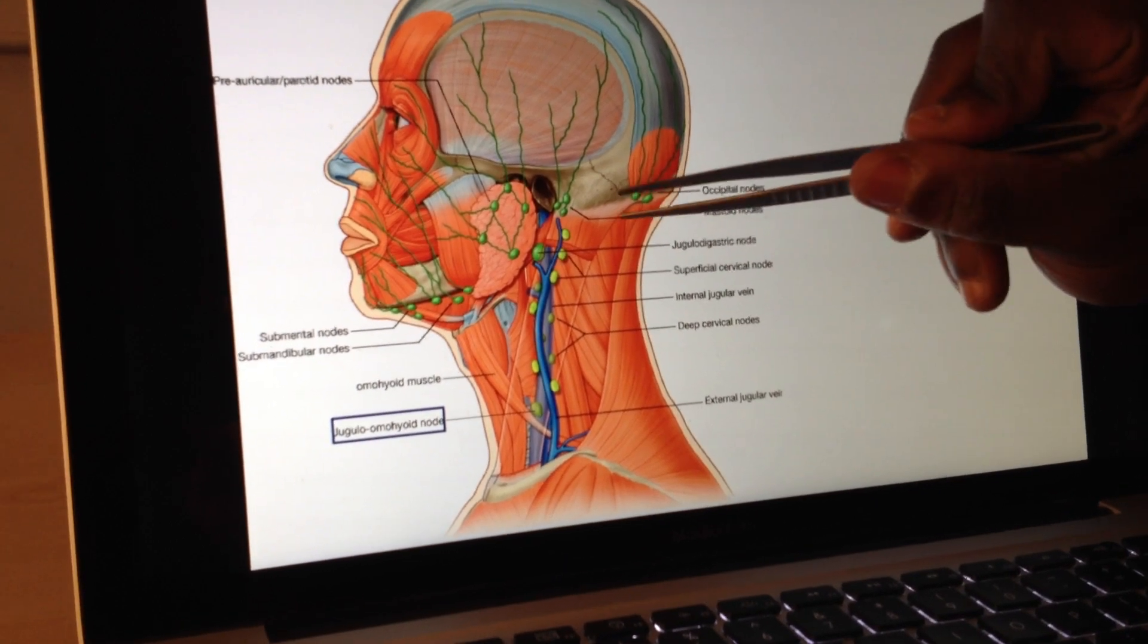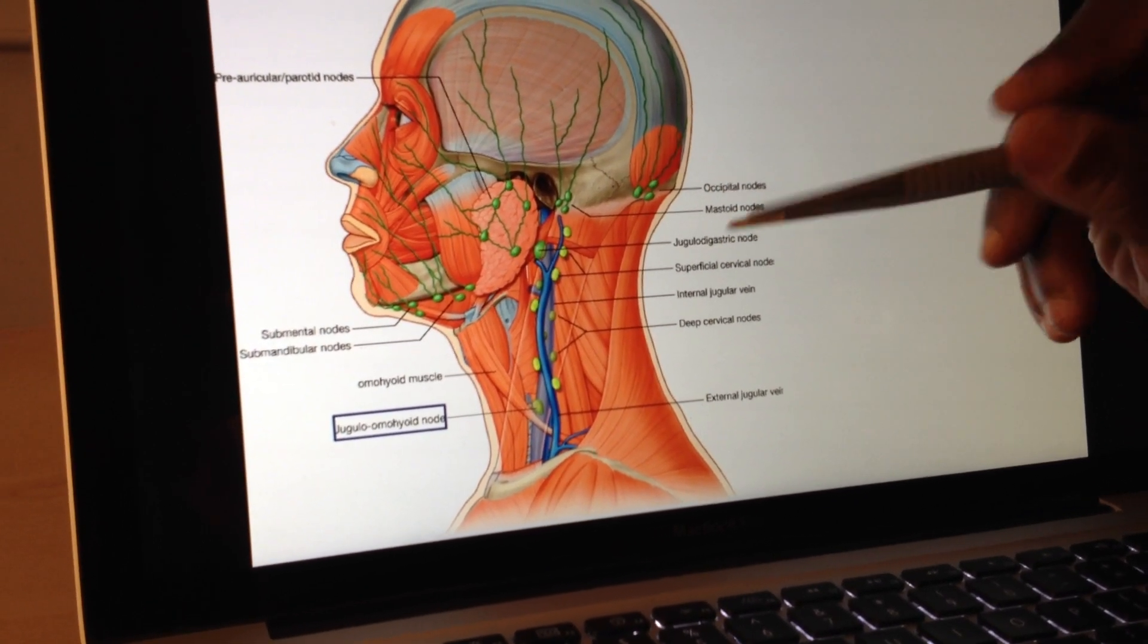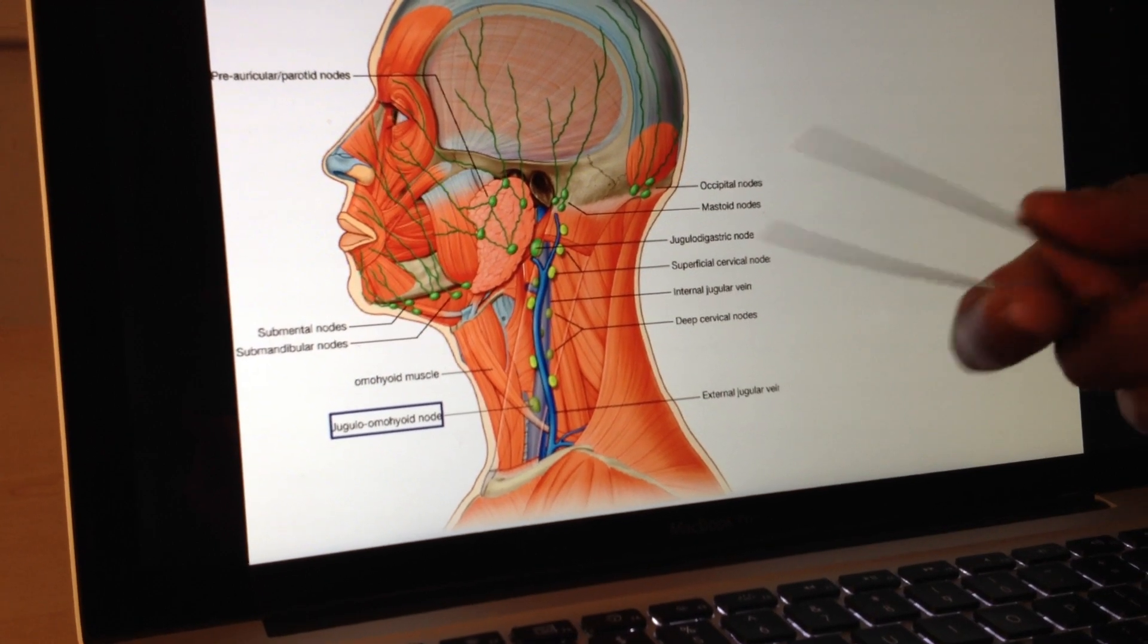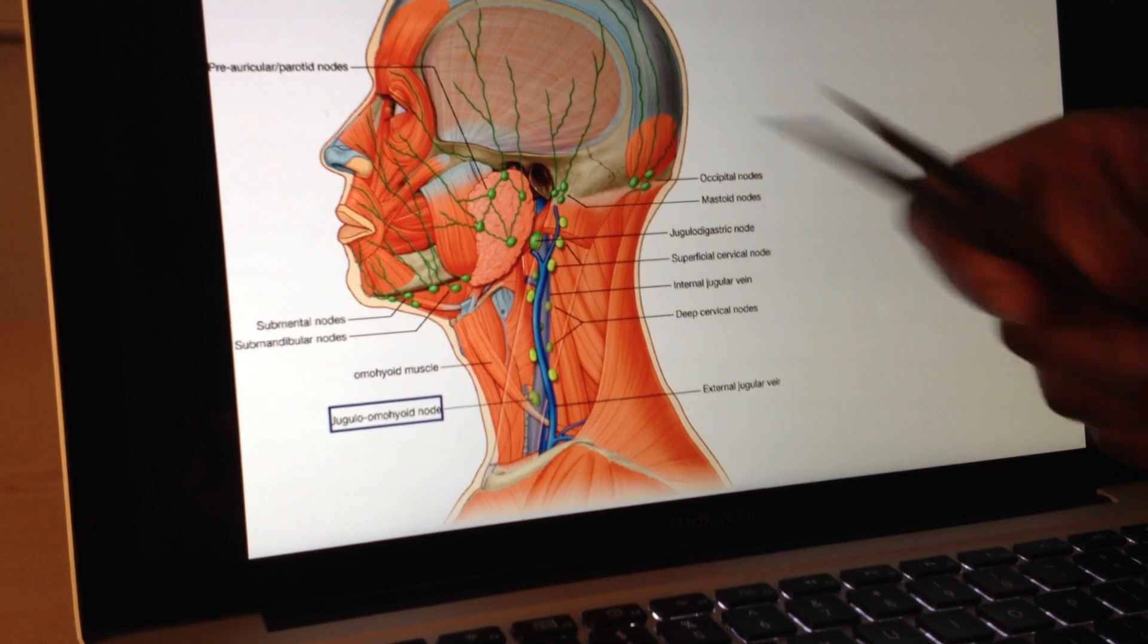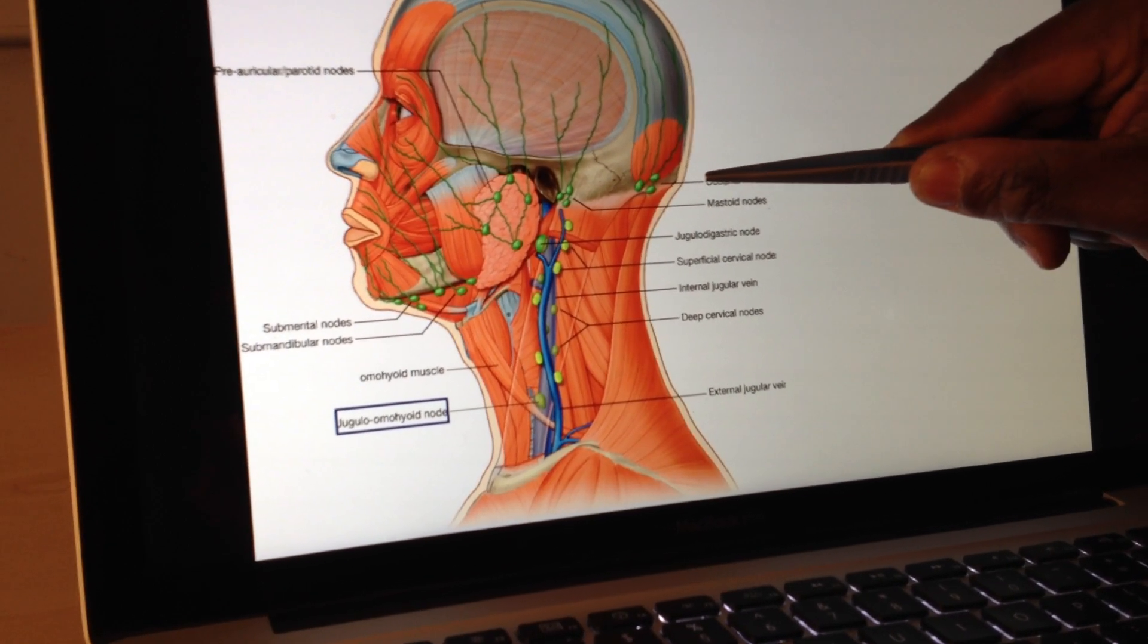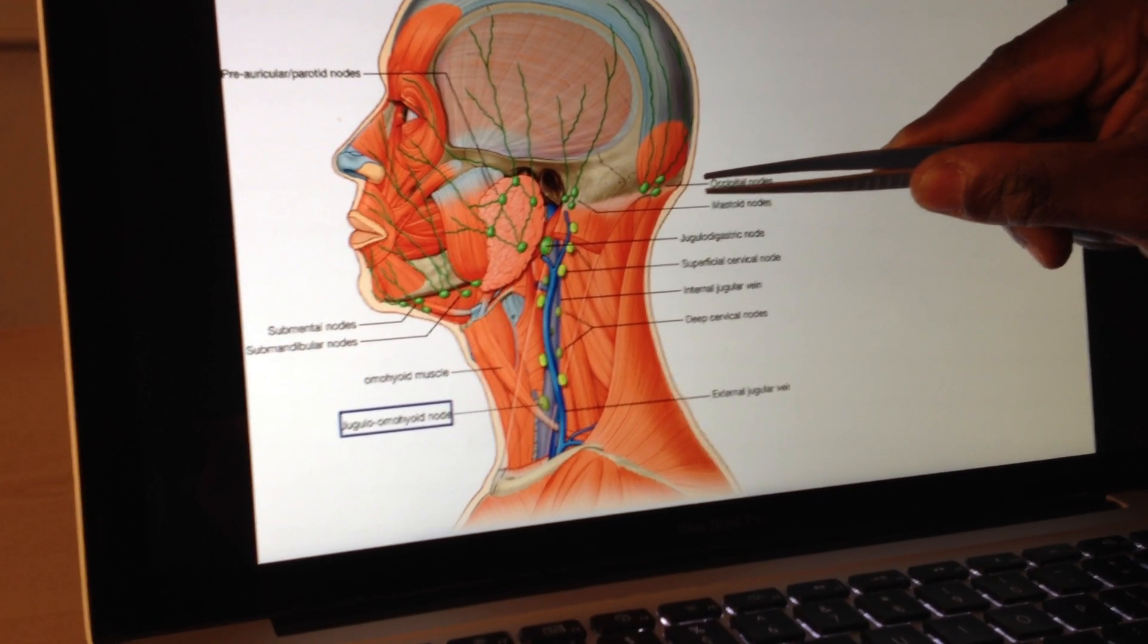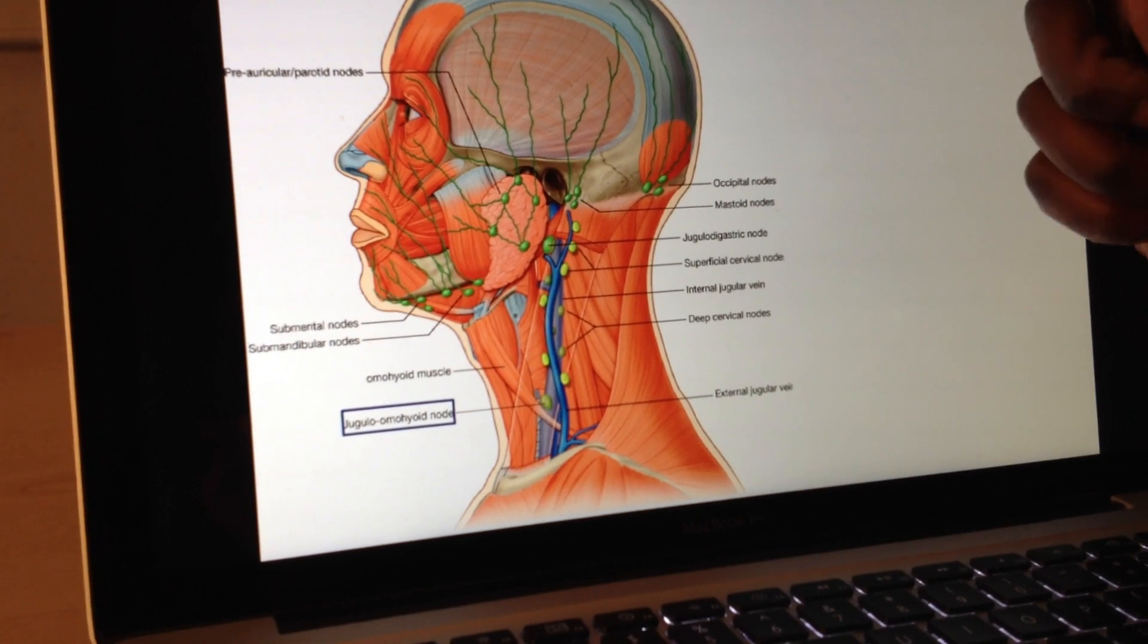If we swing back here, we're now behind the ear. So this is going to be your postauricular, or sometimes called the mastoid node, because that's where your mastoid process is. If we swing back all the way to the back here, this is the occiput, which is your protuberance at the back of the head. And this is your occipital node.